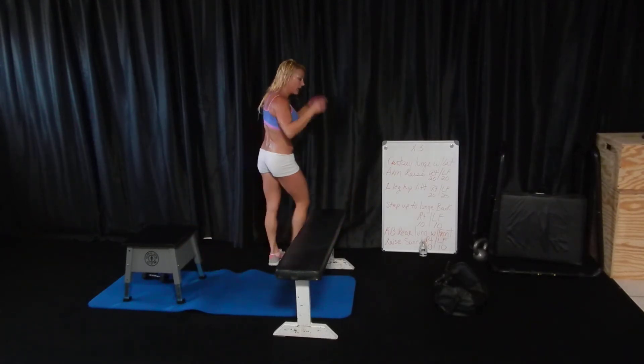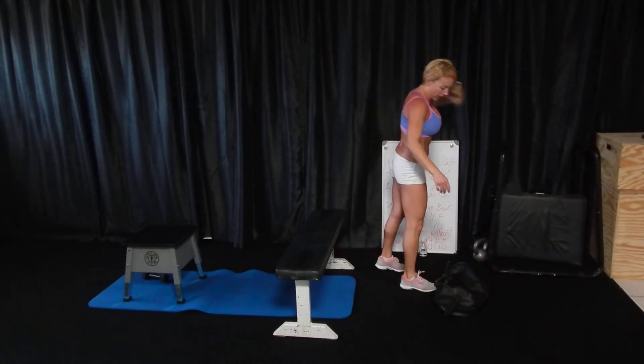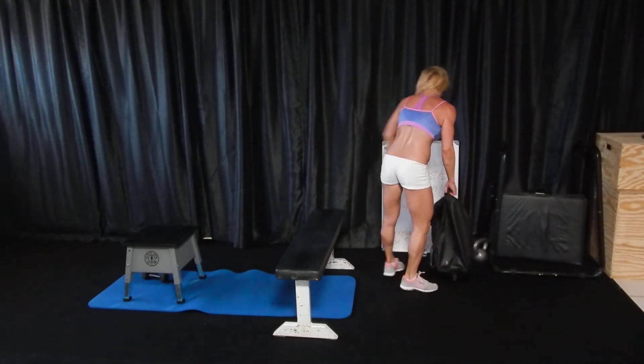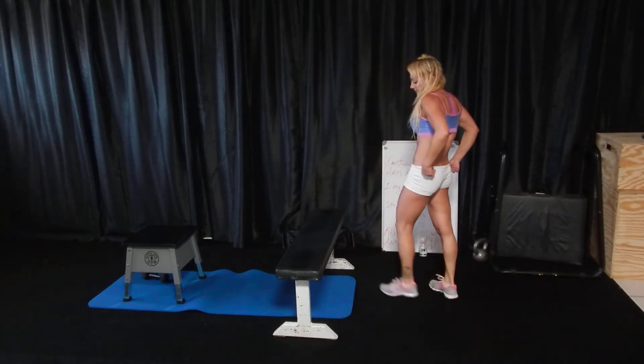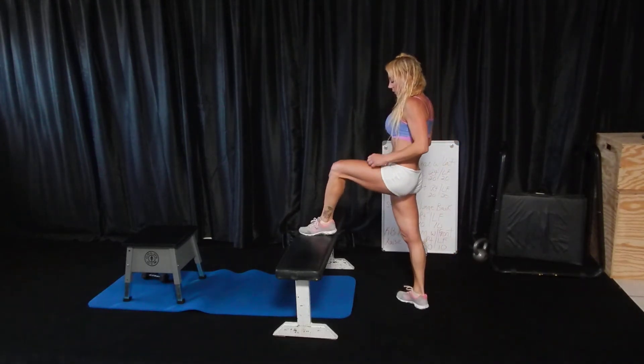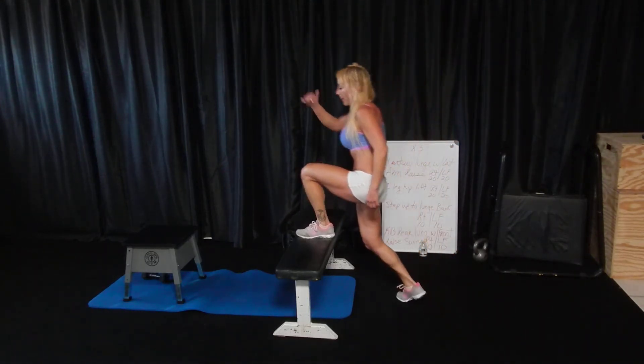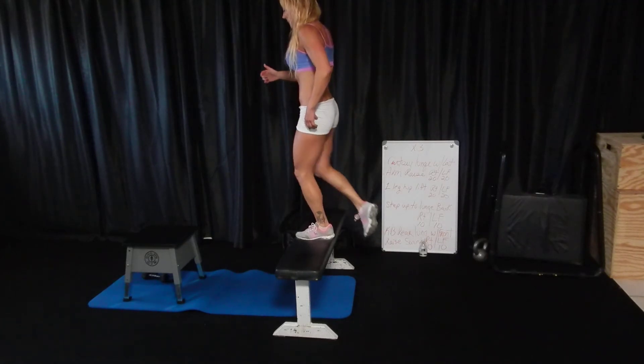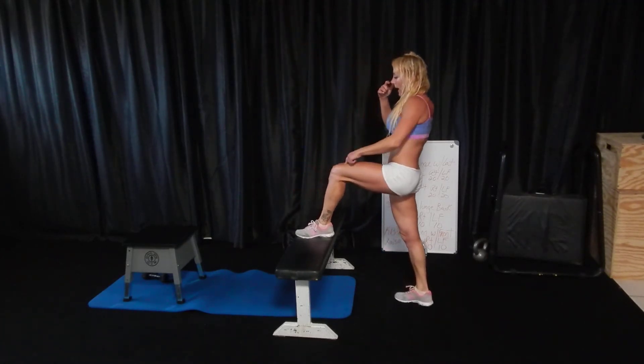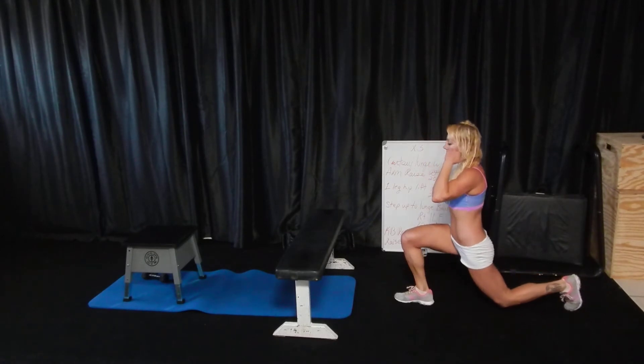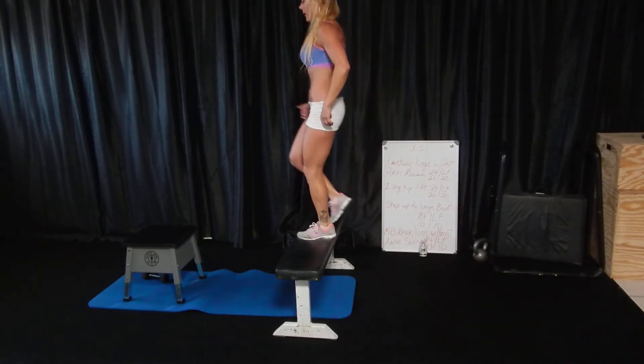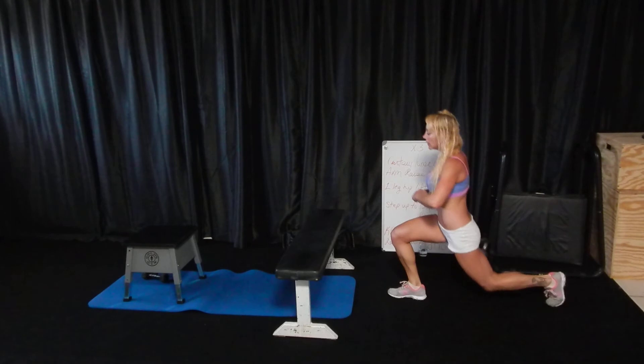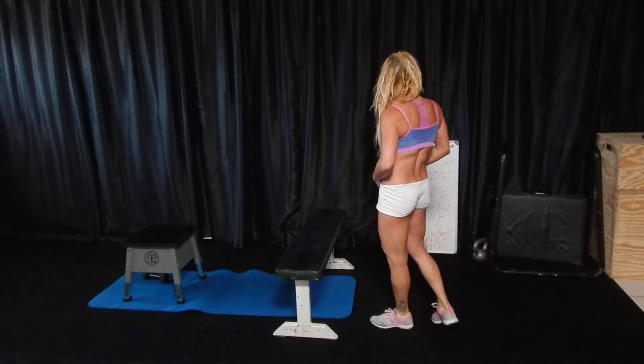And this guy, the step up to the lunge back was, you stepped up, then step right back down the same way came up, and then that leg goes back, and you're up, down, back. Chest up, core tight.